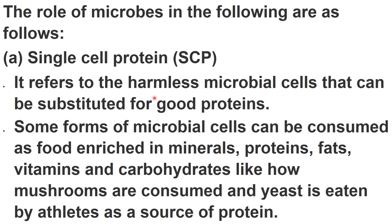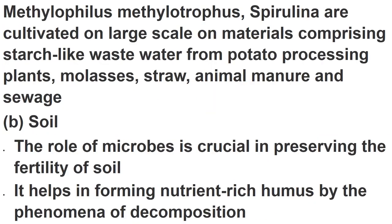Methylophilus methylotrophus is a bacteria used to produce single cell protein. Spirulina is also used. Both Methylophilus methylotrophus and Spirulina are cultivated on large scale on materials like waste water from potato processing, molasses, straw, animal manure, and sewage. These are very good sources of protein.